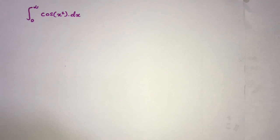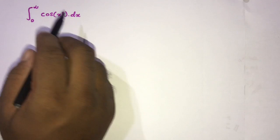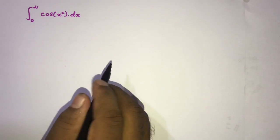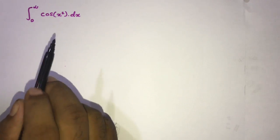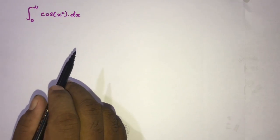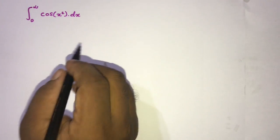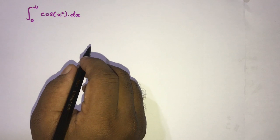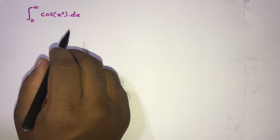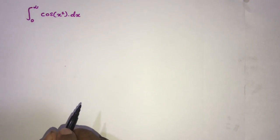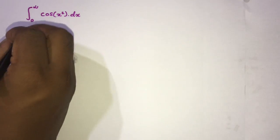Welcome to the Mathematics and My channel. In this video we are going to evaluate the integral from zero to infinity of cosine of x squared dx. We know this is a Fresnel integral. In a previous video we solved this same integral using the Laplace transform, but in this video I am going to evaluate it using Euler's formula.